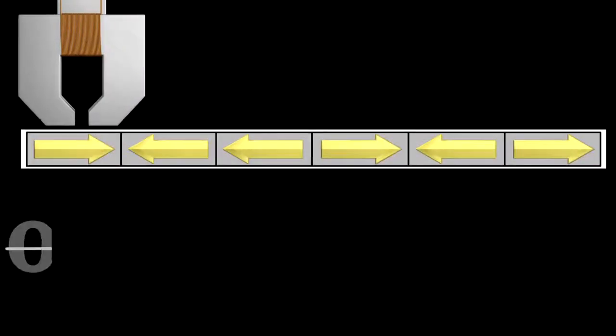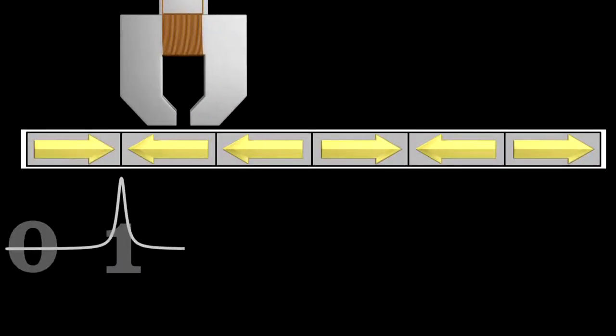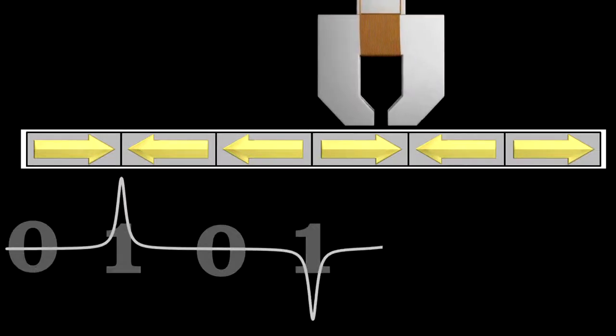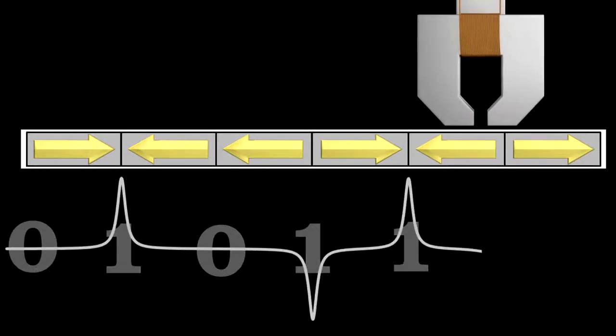So, as the head passes a section where the polarity has changed, it records a voltage spike. The spikes, both negative and positive, represent a one, and when there is no voltage spike, corresponds to a zero.